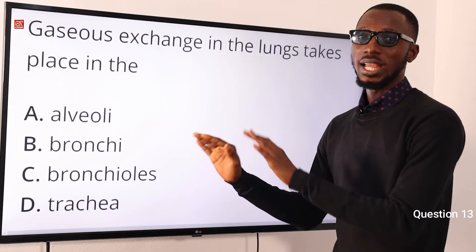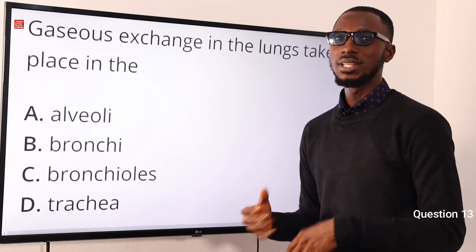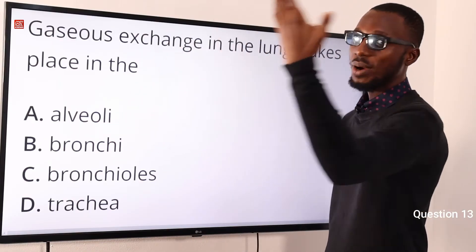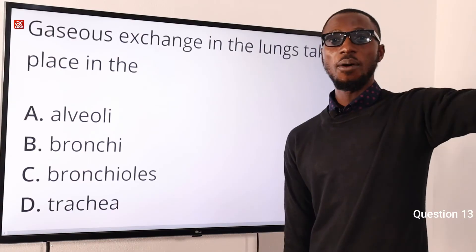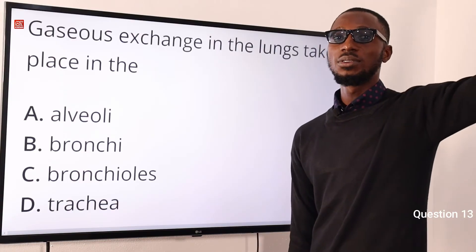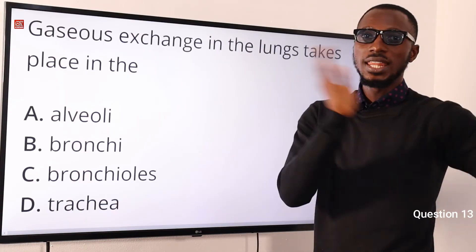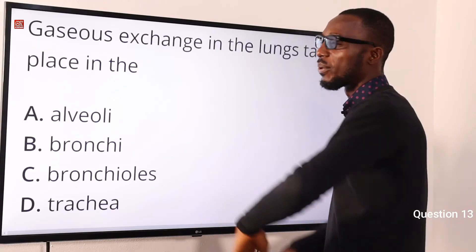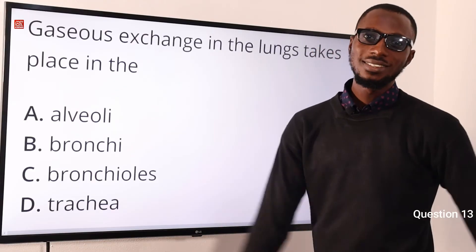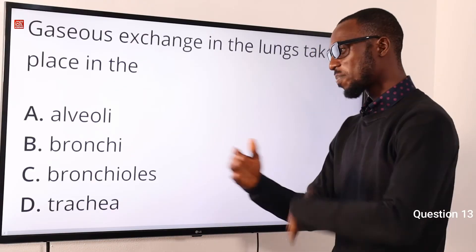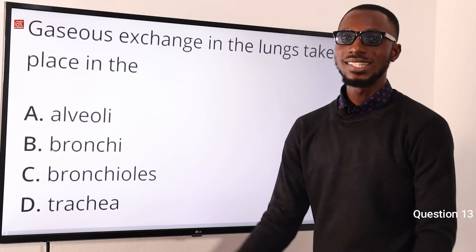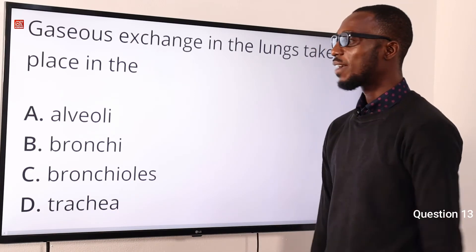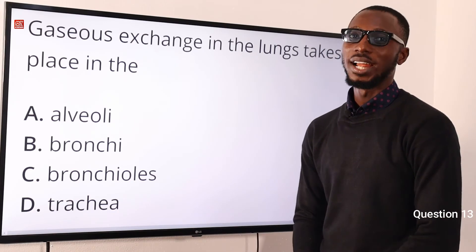CO2 in the blood moves toward the air in the alveoli, and oxygen from the incoming air moves into the blood. Then circulation goes on and on. The correct option is option A for the alveoli.